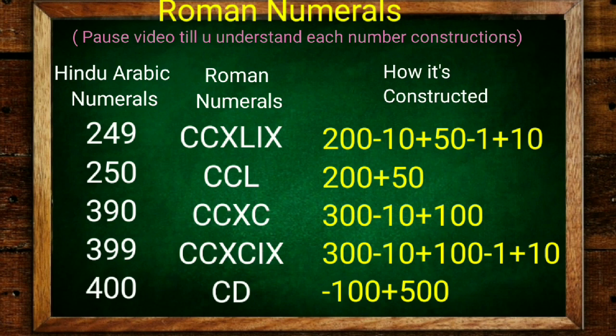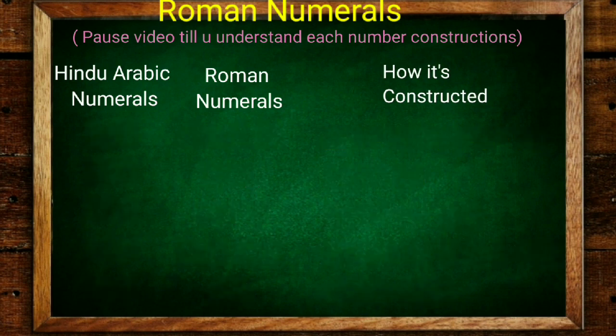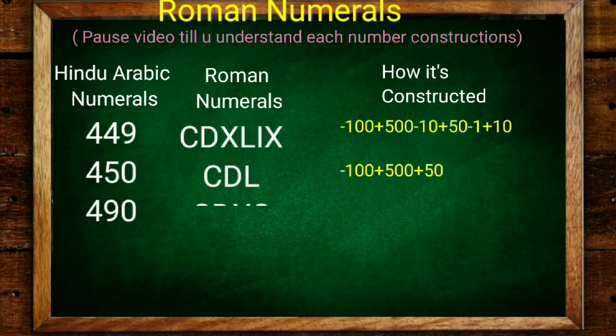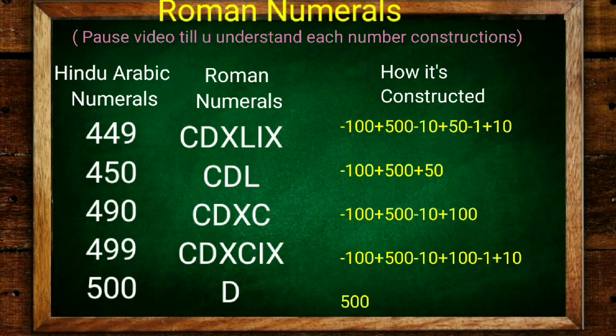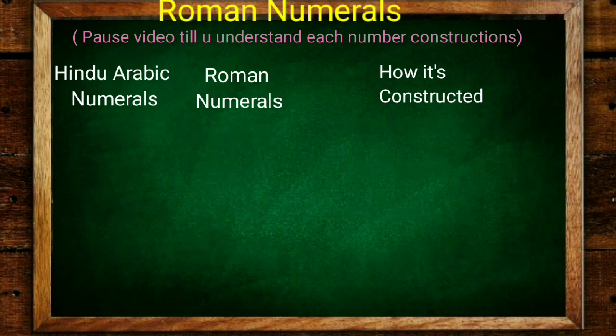500 minus 100 is 400. Now I'll go to 449. 450, 490, 499 is 400 plus 90 plus 9. 500 is D. Now I'll go beyond 500.